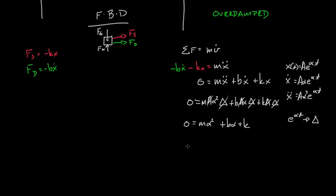We know what α is. This will be our coefficient right here. α equals negative b plus or minus square root b² minus 4mk all over 2m.